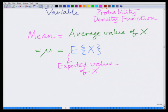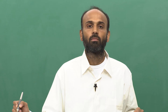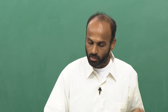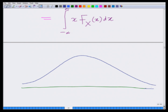E of X basically stands for the expected value of the random variable X, and this is defined as the mean or the expected value of X equals the integral from minus infinity to infinity of x times f of x dx. That is, the integral from minus infinity to infinity of x·f(x) dx. Let us look at what this means intuitively — let us go back to our schematic of the probability density function.